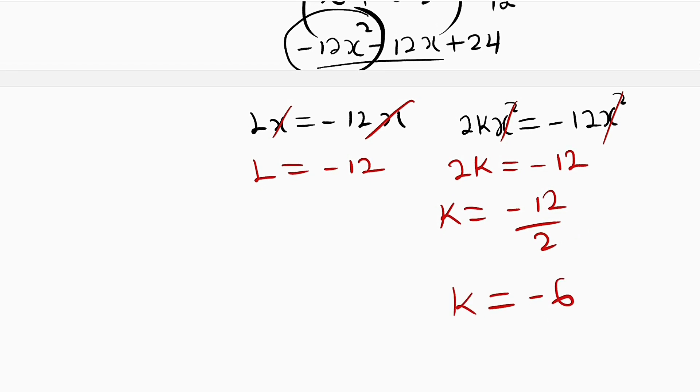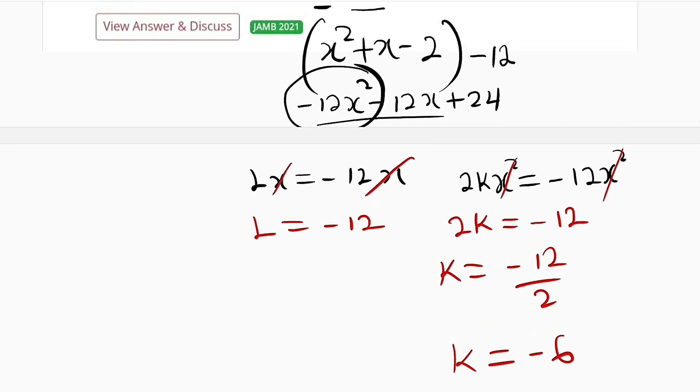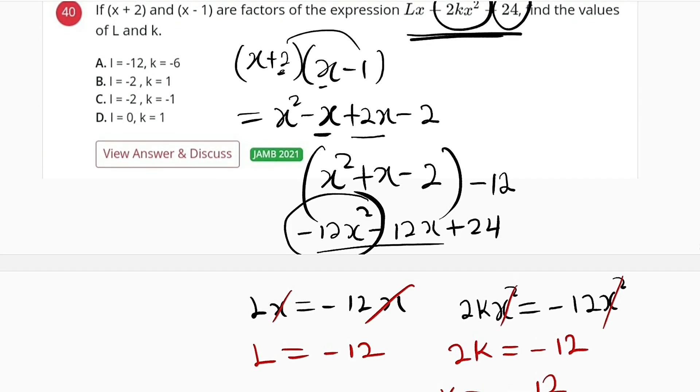So you can see that L is negative 12 and k equal to negative 6. Let us find them here. L negative 12 and k, it's option A.